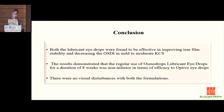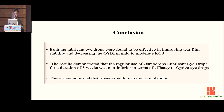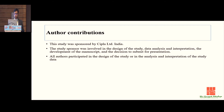Both osmoprotective formulations met the primary efficacy endpoints. The study suggests that both generic and innovator products were equally effective and safe in patients with mild to moderate keratoconjunctivitis sicca. Both were found effective in improving tear film stability and decreasing OSDI, and results demonstrated that regular use of Osmotrops for eight weeks was not inferior in efficacy to Optive, with no visual disturbances with either formulation. This study was sponsored by CIPLA, who were involved in designing, interpretation, and development of the manuscript. Thank you.